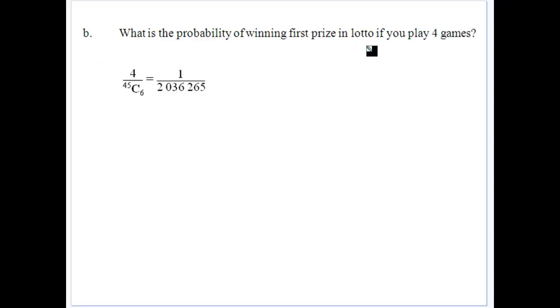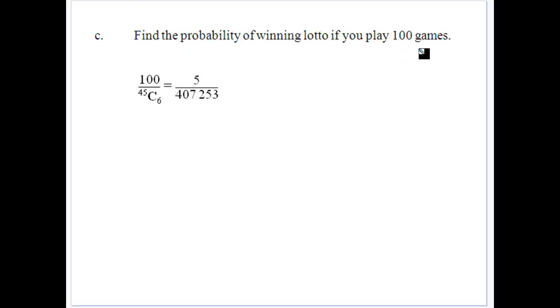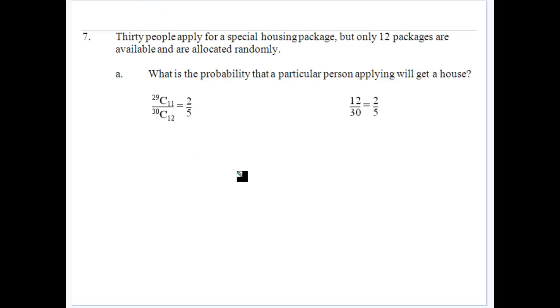What's the probability then of winning the first prize in Lotto if you play four games? Well, there's four games out of the 45C6. Well, your odds come down to one in two million. Still not great. Find the probability of winning if you play a hundred games? Well, a hundred out of 45C6, which is five in 407,253 as a simplified fraction. Still not very probable, but it's better than zero. Keep that in mind. If you don't have a ticket, you can't win.